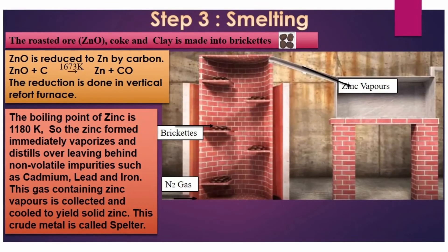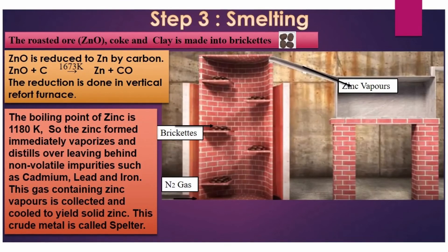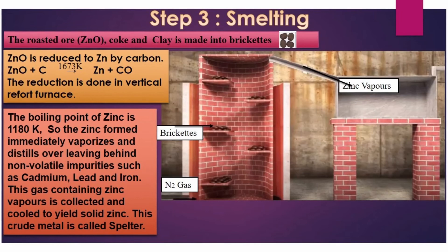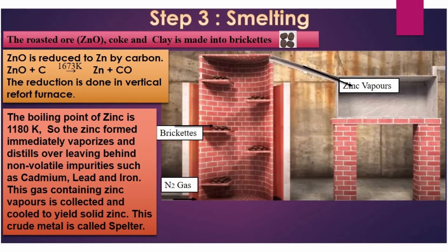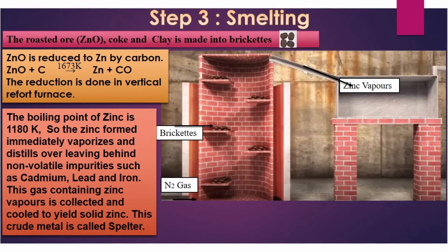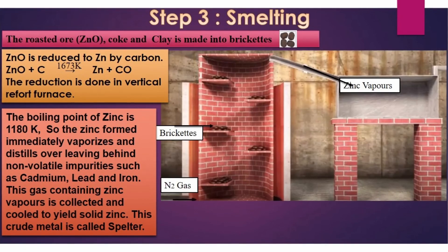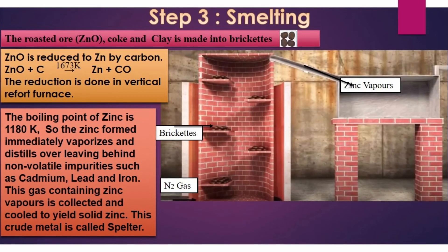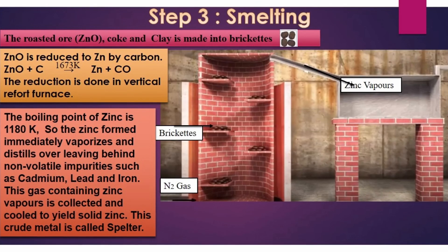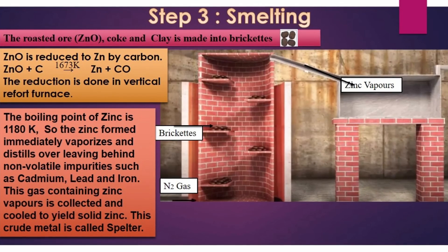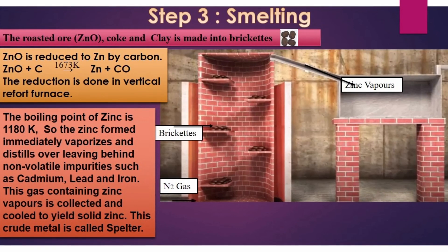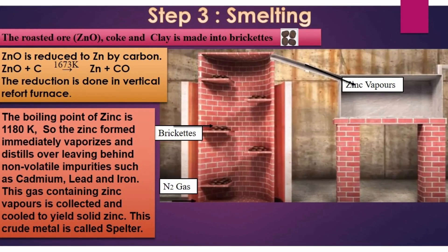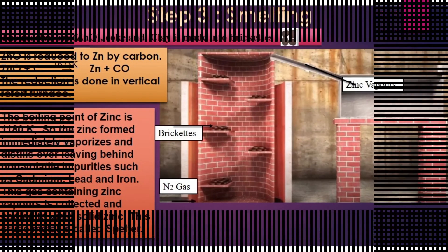So the zinc formed will immediately vaporize, and those vapors will leave behind the non-volatile impurities such as cadmium, lead, and iron. The gas containing zinc vapors will be collected and cooled to yield solid zinc. The recovered solid zinc will be called spelter. Thus the zinc metal is distilled off and collected by rapid chilling.